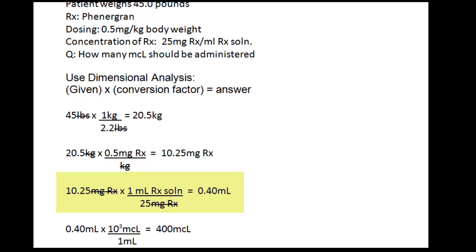The answer in this step is 0.4 milliliters, but the question asks how many microliters should be administered. Our final conversion is to convert 0.4 milliliters to microliters, and there's 1,000 microliters in each milliliter. So the final answer is 400 microliters.